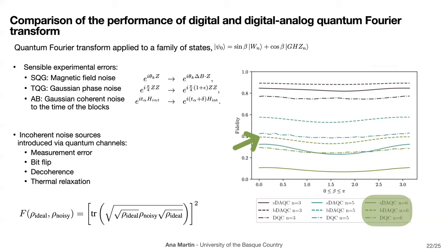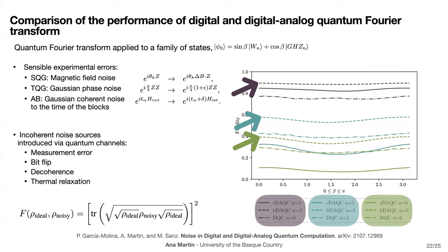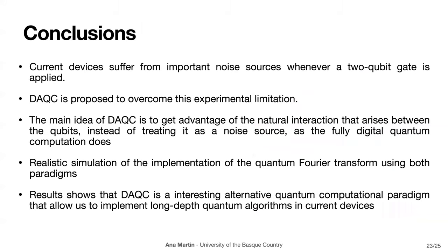This confirms our expectation: the inherent error from not turning the interaction off until the very end scales much better than the error from two-qubit gates or from the stepwise turning on and off. This result holds across all qubit counts studied — for five qubits and three qubits, bAQC has the highest fidelity of all paradigms. The reference for this work — including details on how we introduced both coherent and incoherent noise sources — is in the paper that came out today.